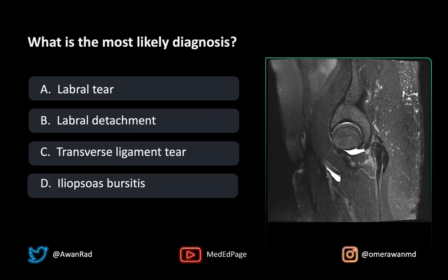First of all, it's important to understand that this is an arthrogram, so all this high signal fluid is actually contrast that we've injected into the joint space. There is some fluid here around the iliopsoas muscle, maybe the iliopsoas bursa, but that's iatrogenic — that's from our actual injection. The main finding here is increased signal along the anterior superior labrum, which suggests a labral tear.